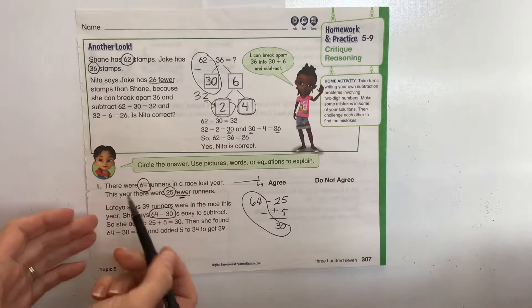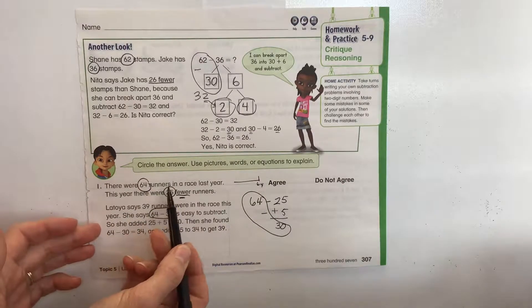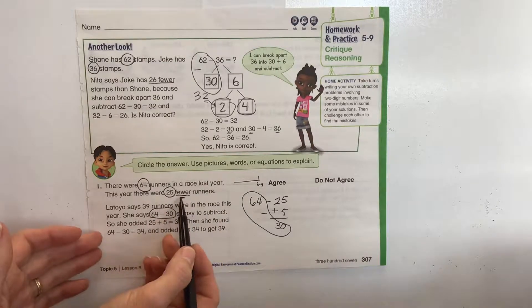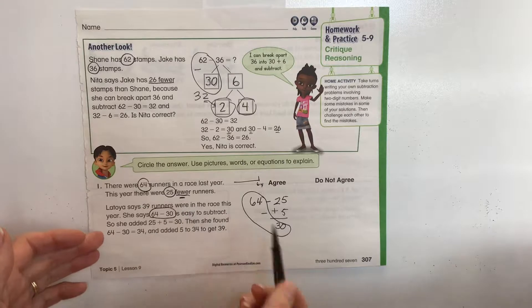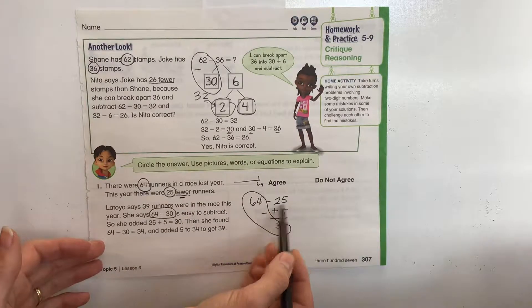So we're going to start down here. There were 64 runners in a race last year. This year there were 25 fewer runners. Fewer lets us know we're going to subtract. So our real equation is going to be 64 minus 25.